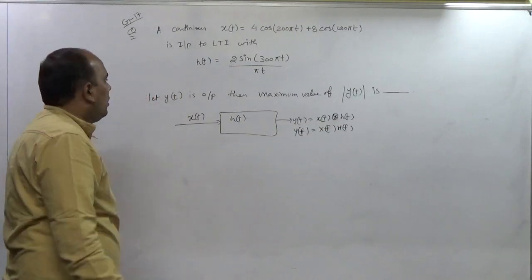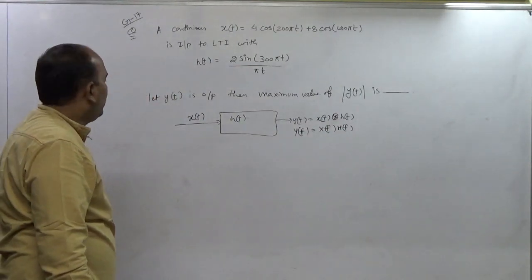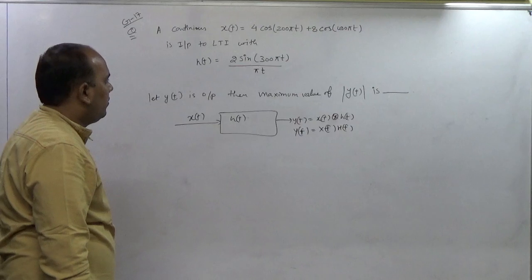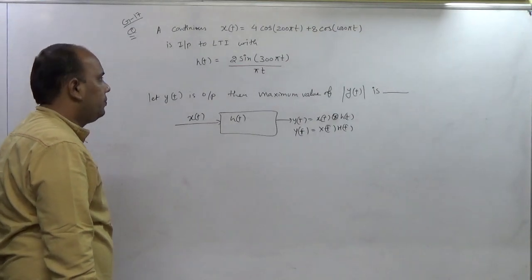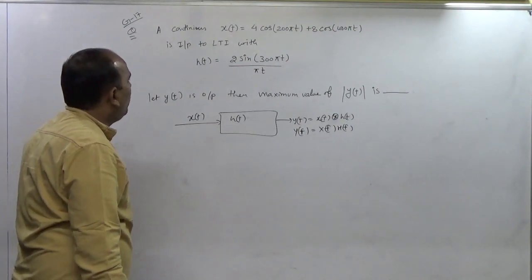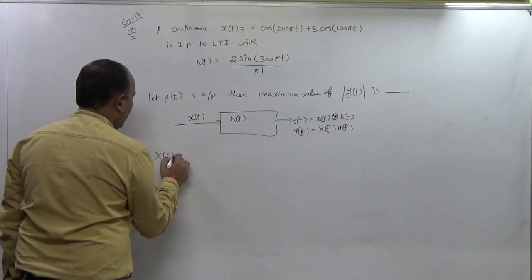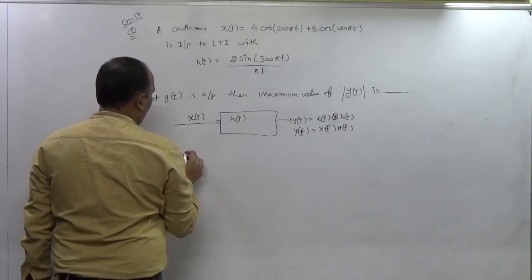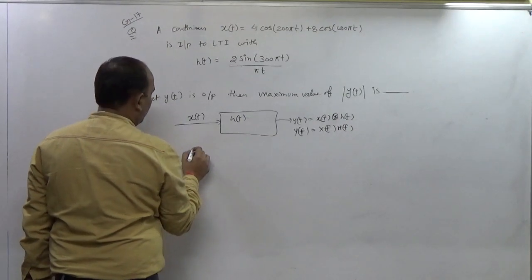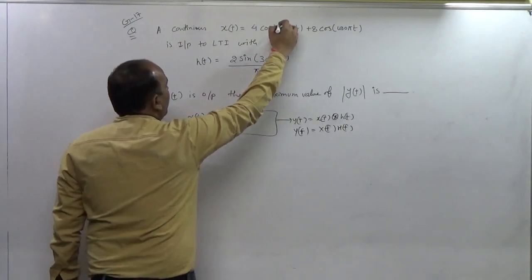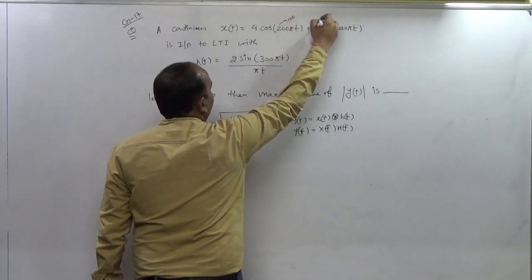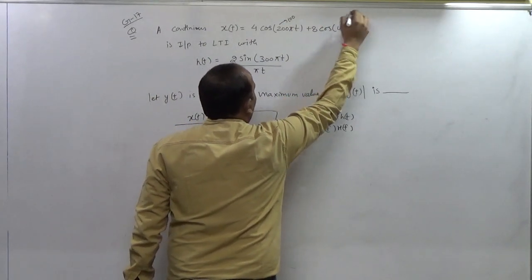This is the first thing and we have to find out the Yt and then find the maximum value of mod Yt. Now this is Xt, so for the input, what will be the Xf? That will be just take the Fourier transform of this one. Its frequency is 100, 2πf, and this is 200.